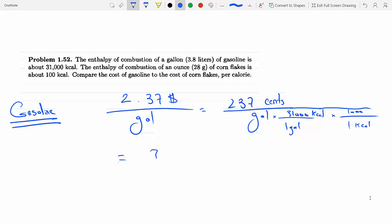If we plug this in we get 7.65 times 10 to the minus 6. These guys go away, these units kilocalories, here we have small calories. So we get 7.65 times 10 to the minus 6 cents per one calorie for gasoline.